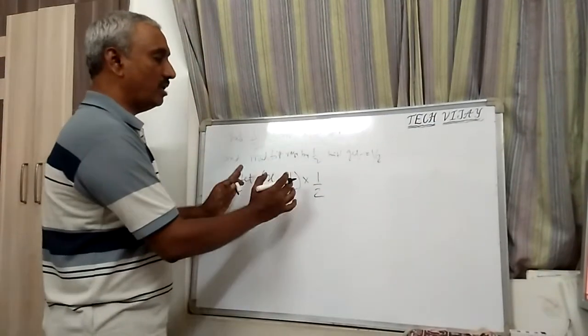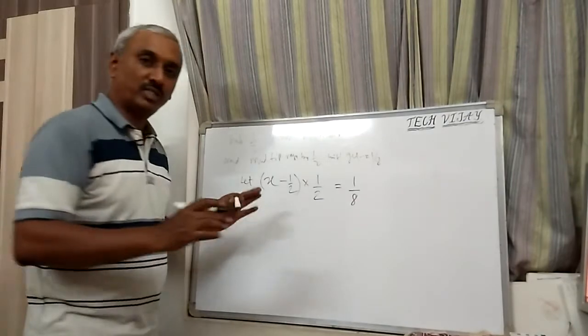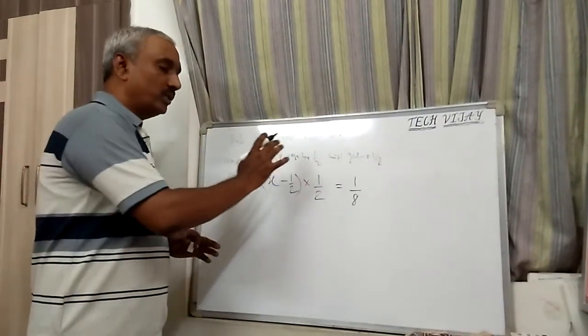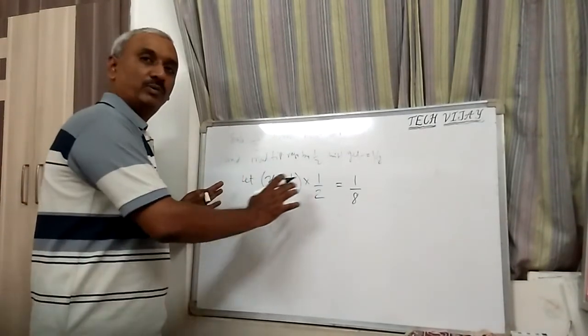This we have to multiply with 1/2. Then this value is equal to 1/8. So in this way, we have to first write the equations exactly as the question is given, understand correctly, and write the equation in this fashion.